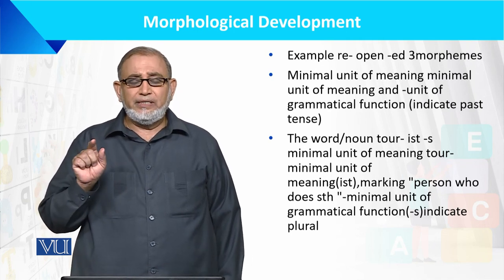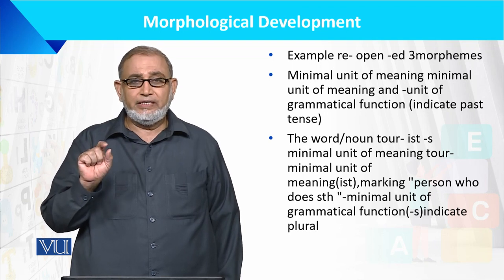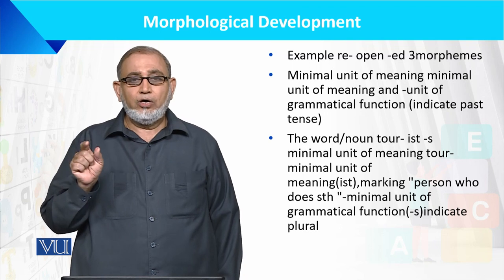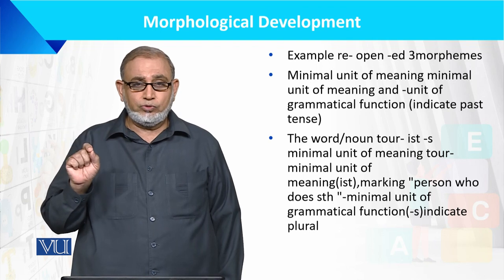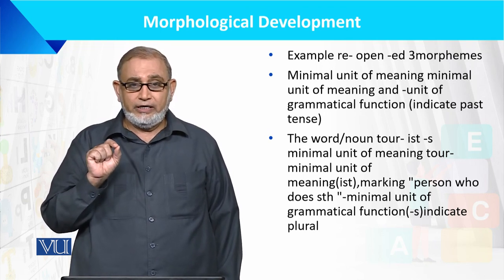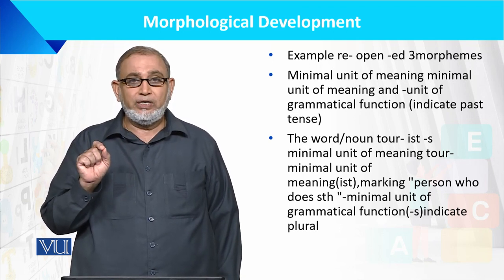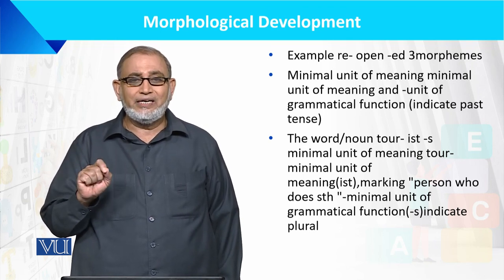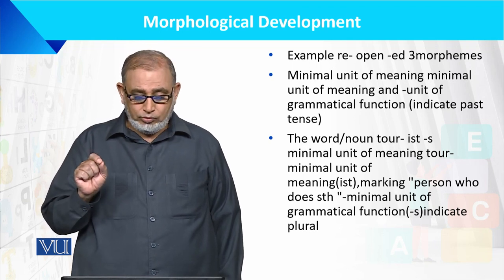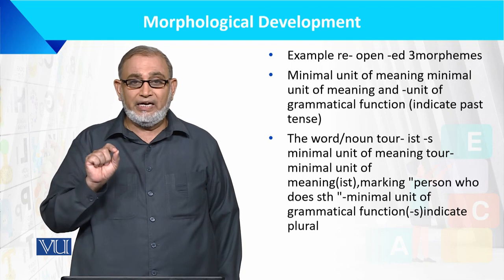Tenses کی مثال لیتے ہیں — فرض کریں verb 'open' ہے۔ Past tense میں یہ 'opened' بنا، اور اگر اس سے پہلے 're' لگائیں تو 'reopened' بنا۔ یہ تین morphemes ہیں جو past tense convey کرتے ہیں۔ اسی طرح noun 'tourist' کے ساتھ 's' لگائیں تو plural بنتا ہے — یہ morphemes grammatical sense convey کرتے اور words کو complete کرتے ہیں۔